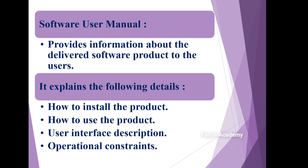The software user manual explains the following details: how to install the newly developed software product, how to use the product, the user interface description — how the user should interact with that product — and the operational constraint, meaning how the product will operate. All this information is explained in the software user manual.